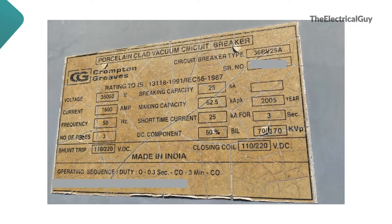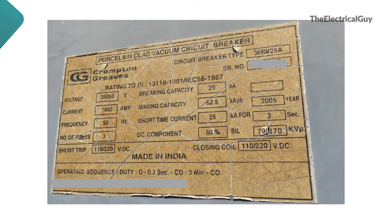Generally, vacuum circuit breaker is used below 72.5 kV voltage level. In this video, you will learn about the parameters which are mentioned on a nameplate of vacuum circuit breaker.